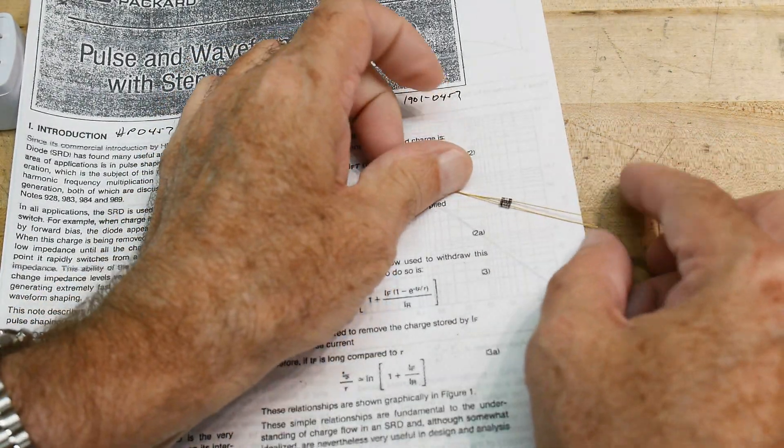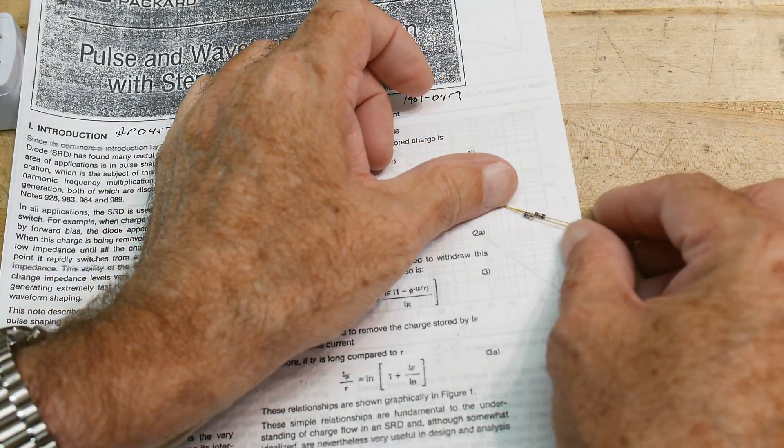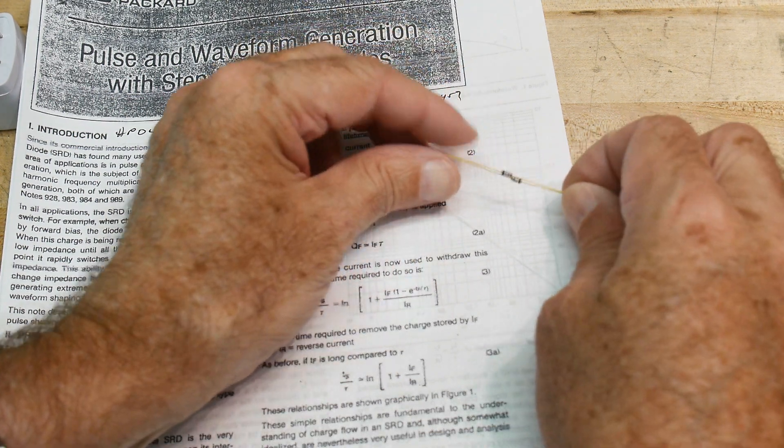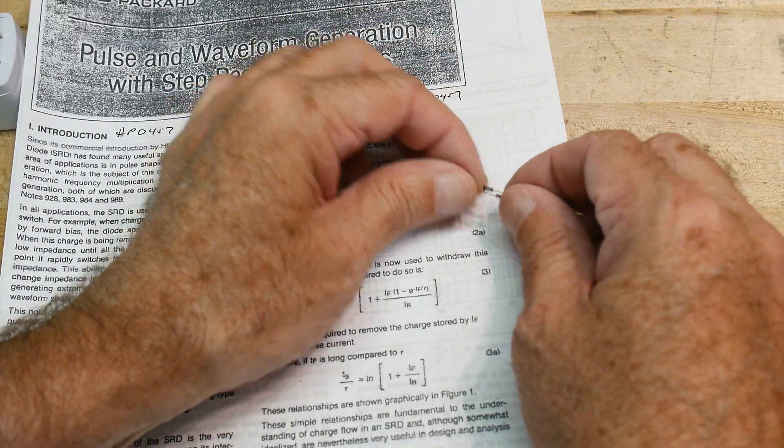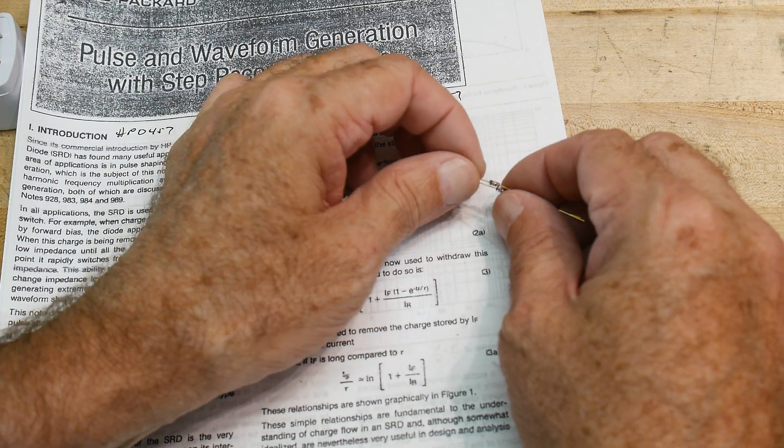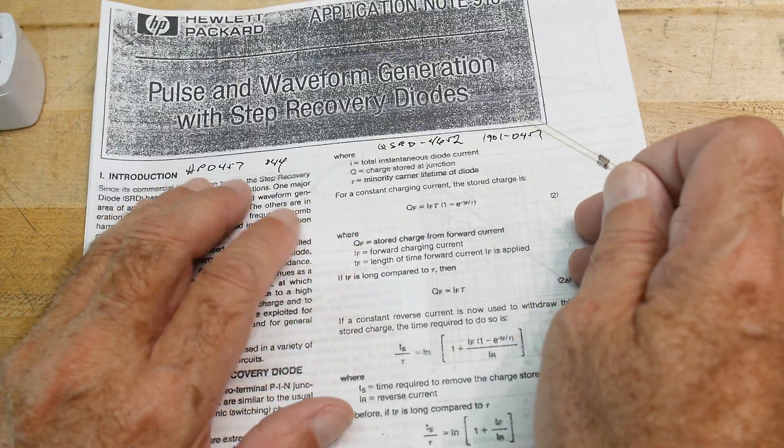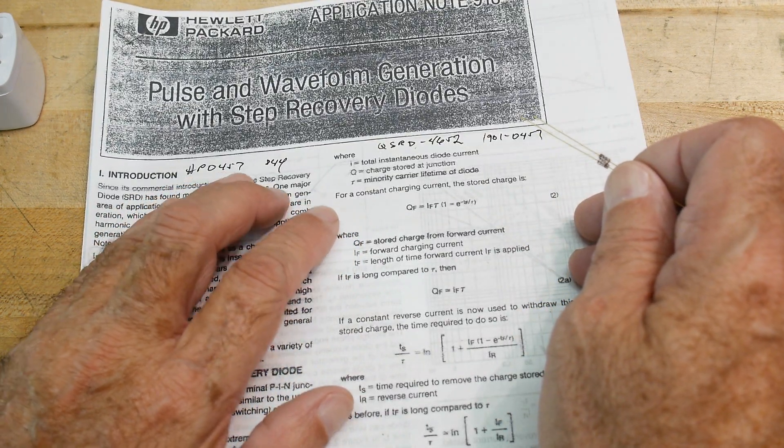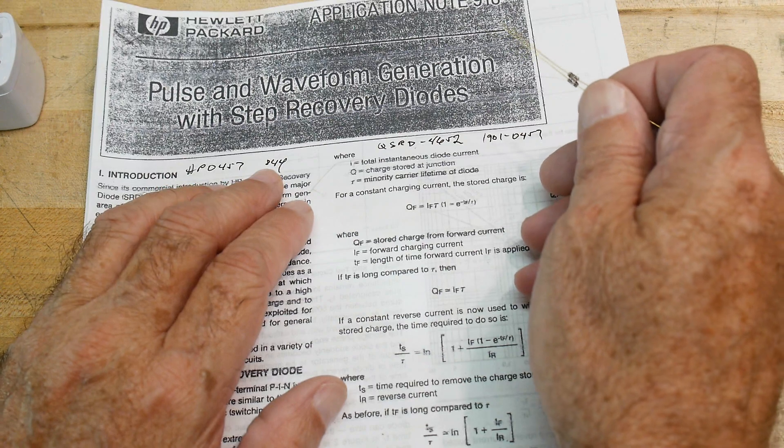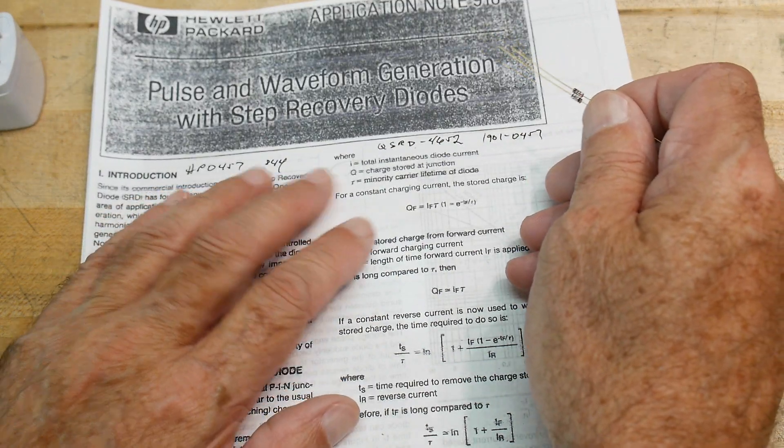Alright, so time ago a viewer sent me some step recovery diodes, and I've finally gotten around to trying them out. These are Hewlett Packard step recovery diodes, back from the way back days. Gold leads and the whole thing. Now they're marked HP 0457s, and they look like they're the fourth week of 1984 is when they were built.